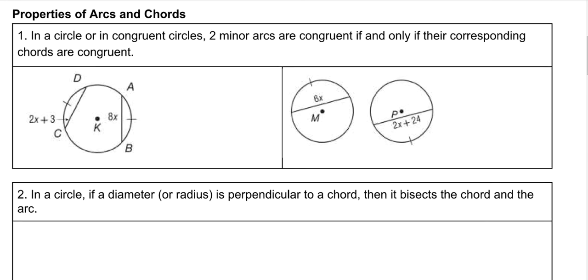So one of the first properties is in a circle or in congruent circles, two minor arcs are congruent if and only if their corresponding chords are congruent. So in other words, this arc is congruent to this one. That's what it says here. So because those are congruent,